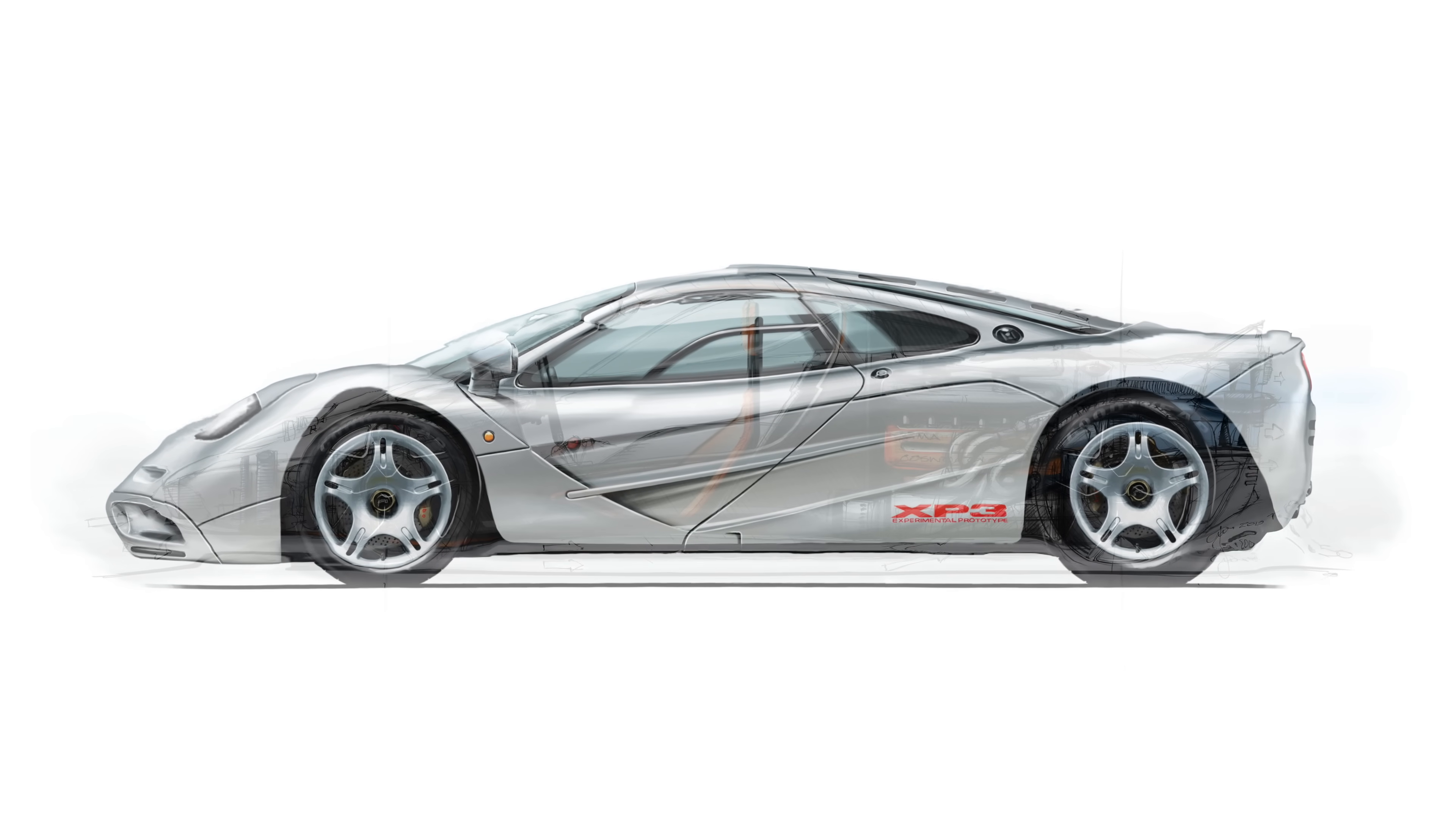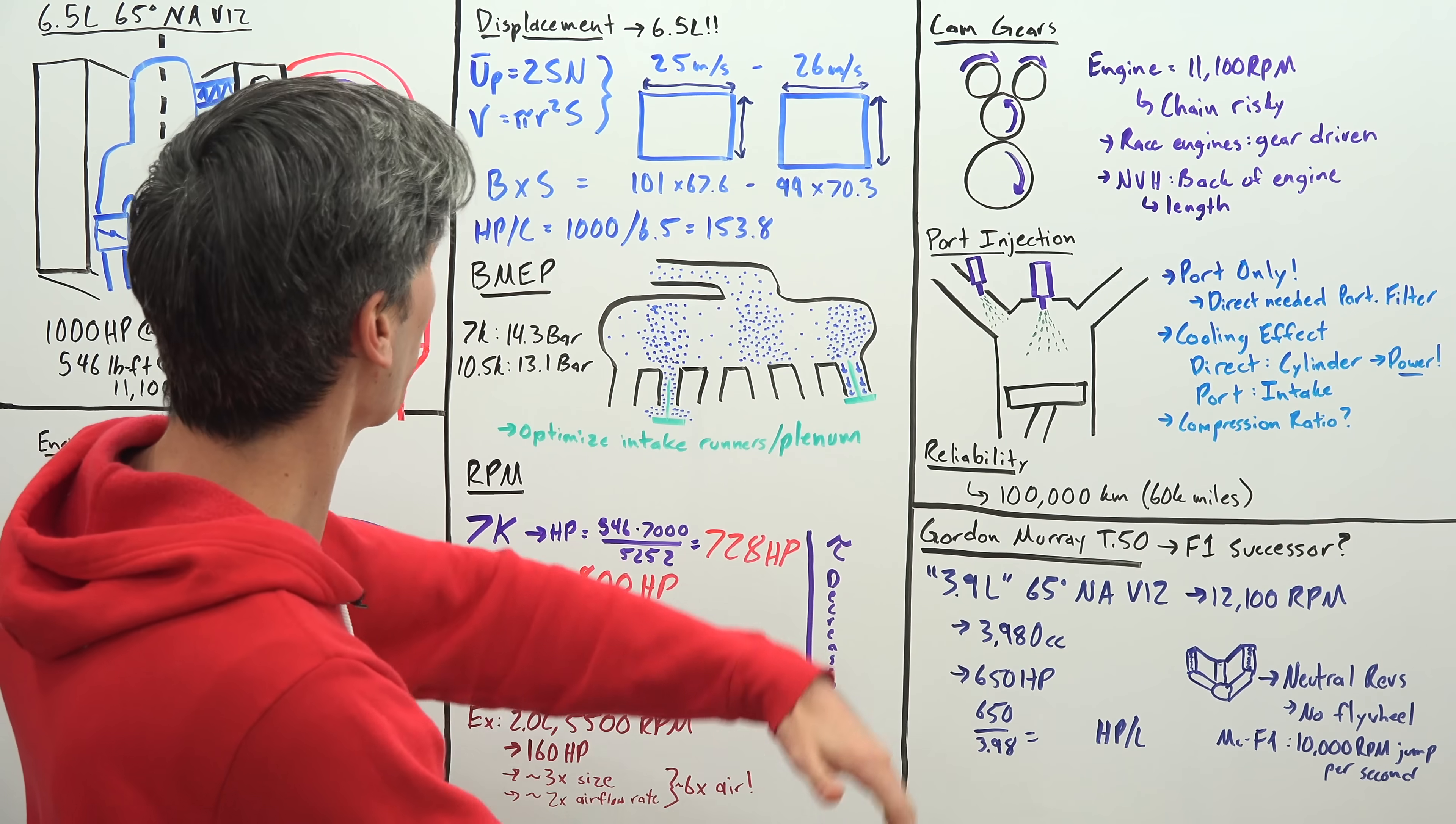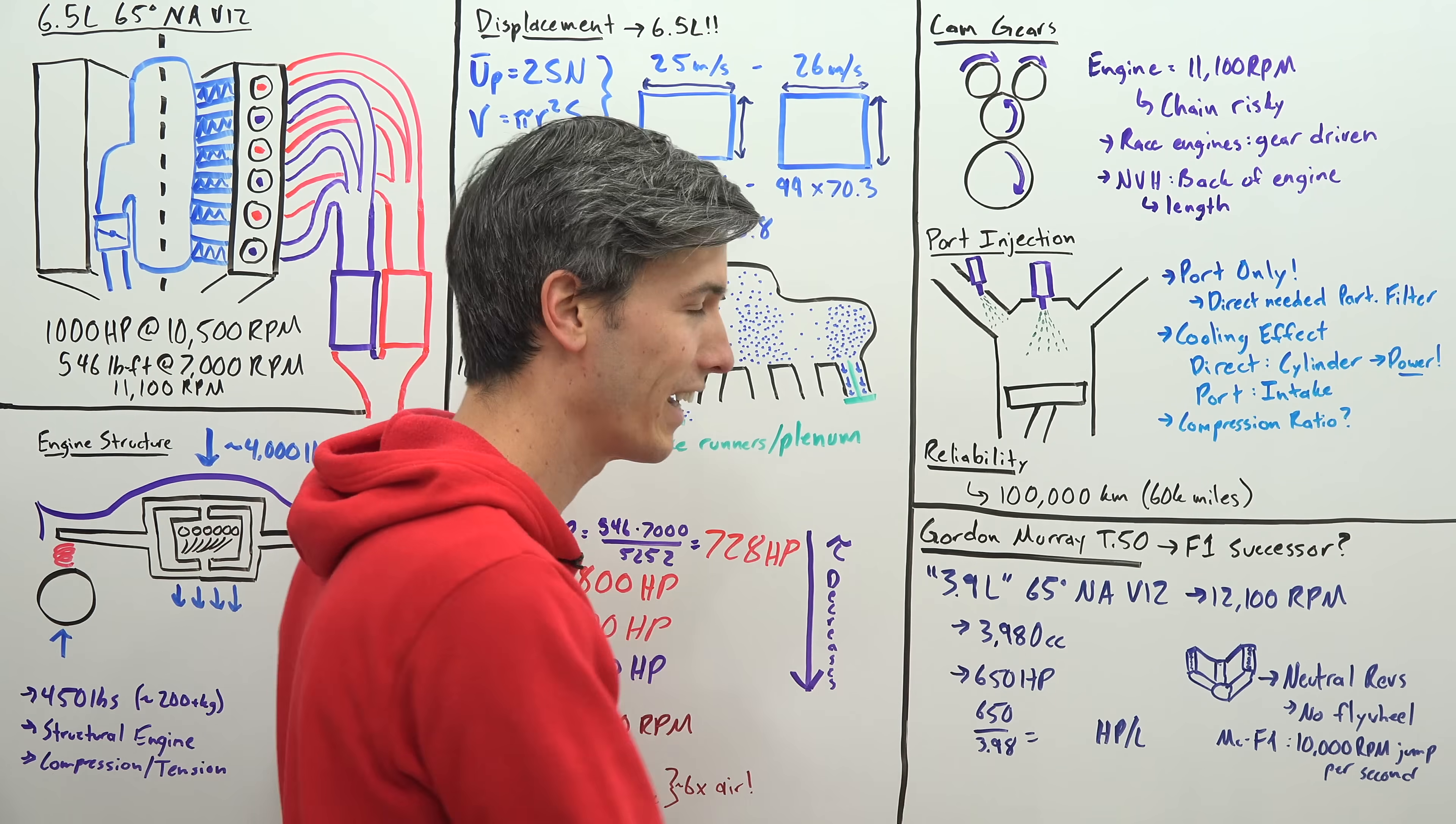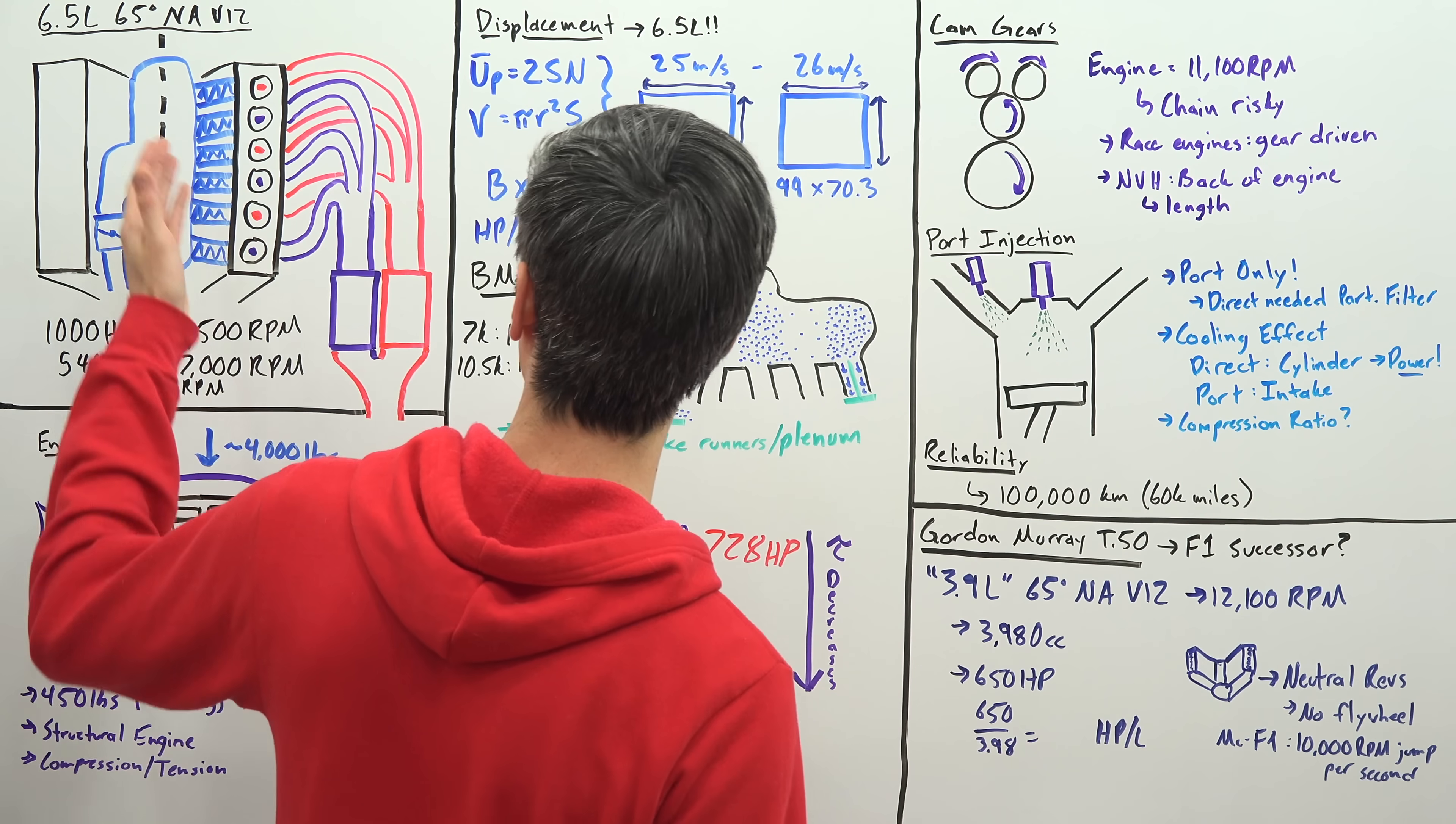So finally let's discuss this Gordon Murray T50, the successor to the McLaren F1. And they claim this is a 3.9 liter 65 degree naturally aspirated V12 engine revving to 12,100 rpm, so another thousand rpm over what this one was doing though in a smaller package. Now I put quotes around 3.9 liters because it's really a four liter engine, if you look at the cubic centimeters this is a 3.98 liter engine. So I think they didn't want to call it a four liter engine, so it isn't quite four liters but if you were to round you would never round 3.98 to 3.9. So either way it's basically a four liter V12.